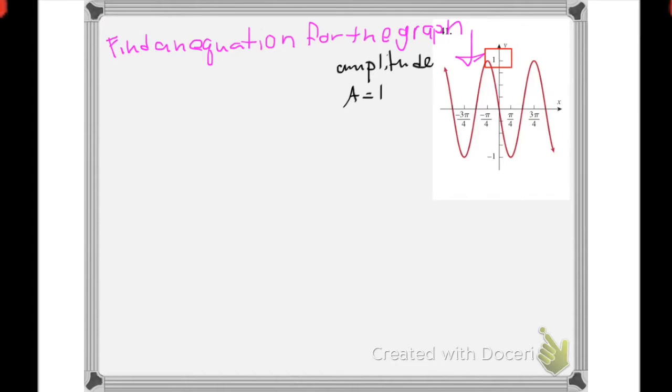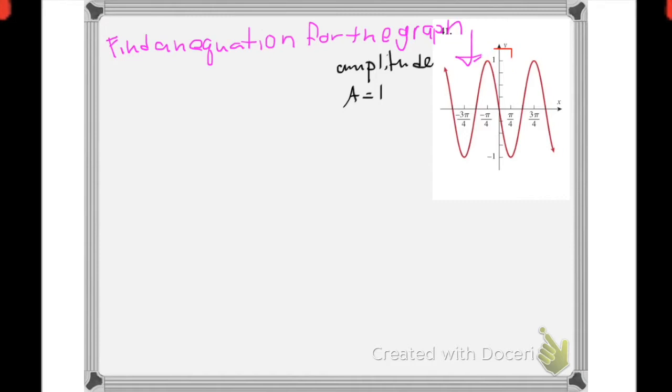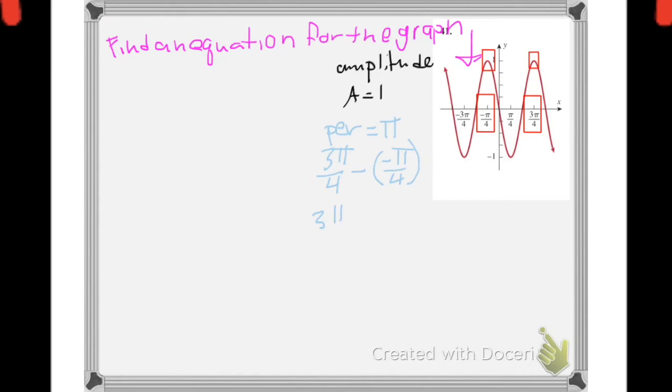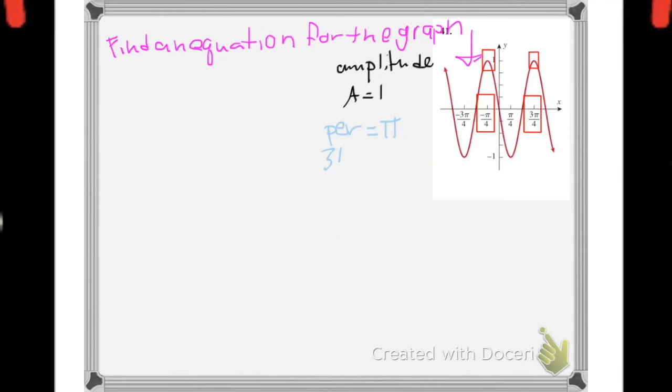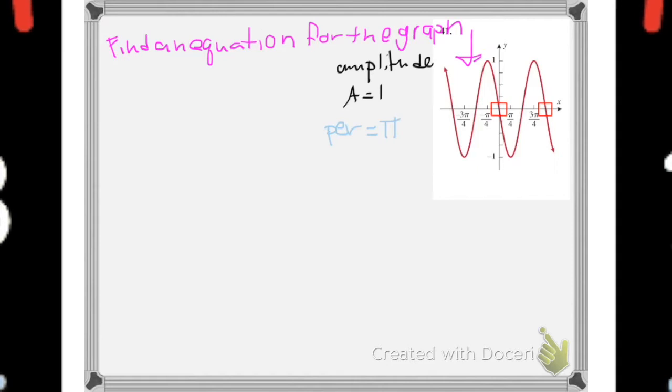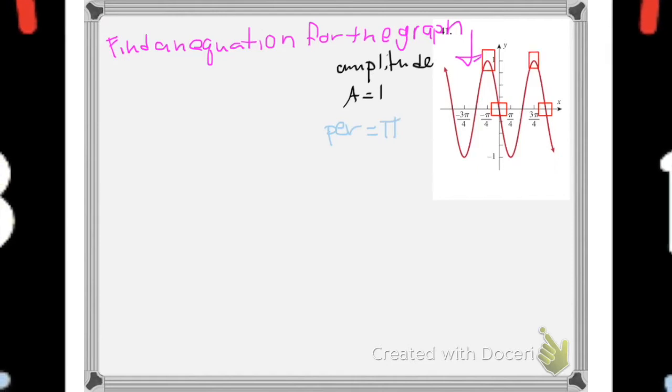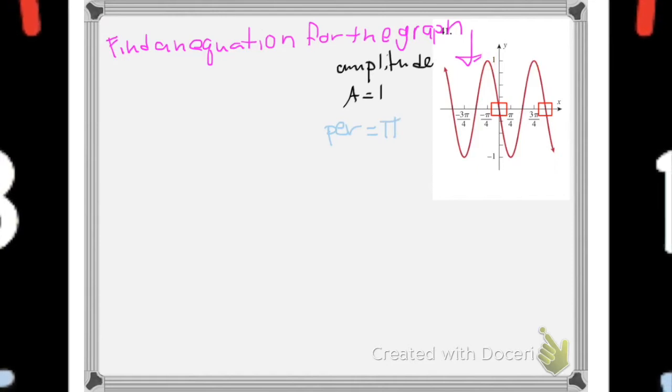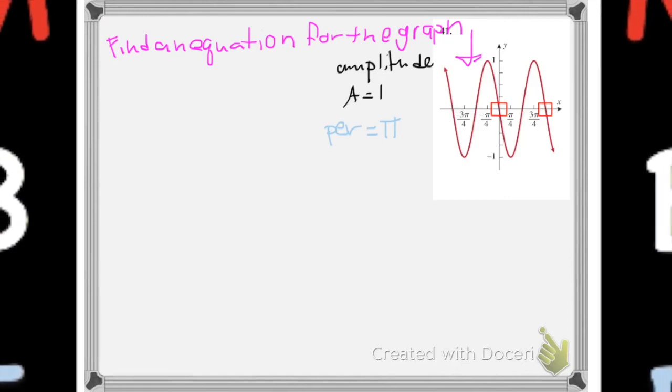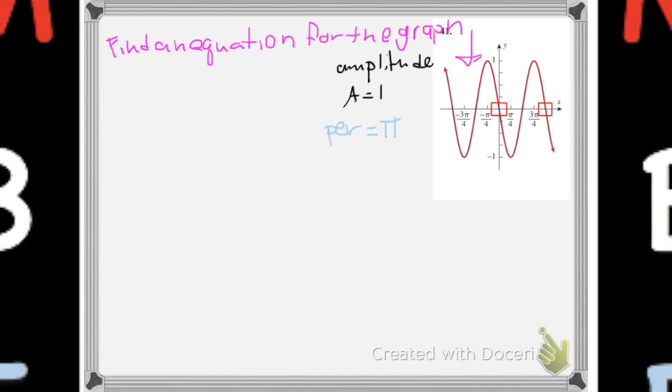Now what we're looking for: the period. Whoa, whoa, whoa, back that math up. If I'm looking at these first two right there, I see that those are π far away. The period is the time that it takes to repeat, the time that it takes to repeat. So it looks like it repeats every π.